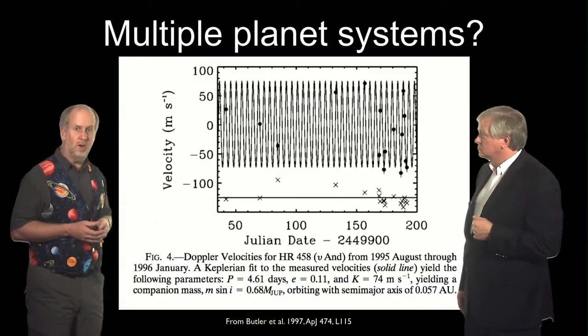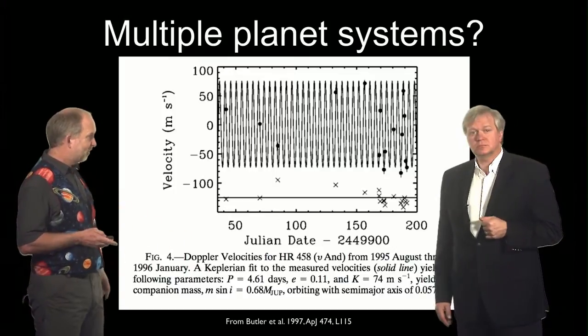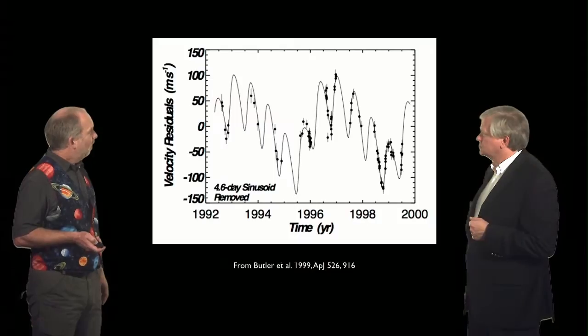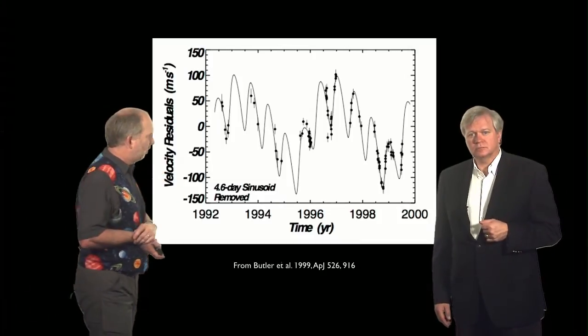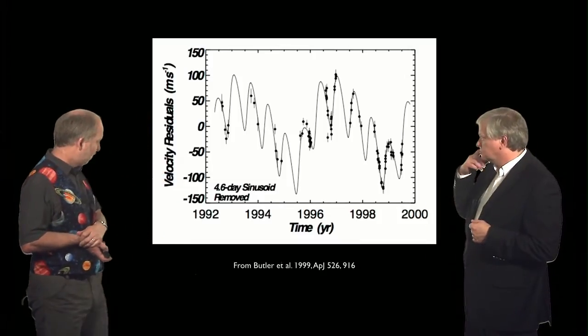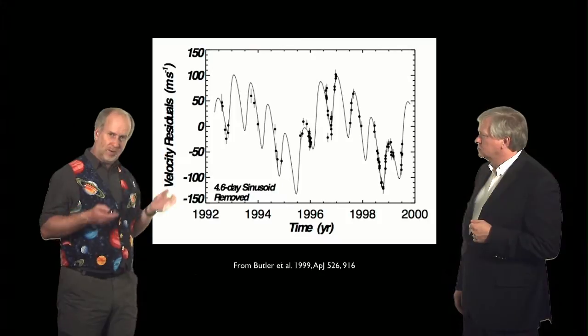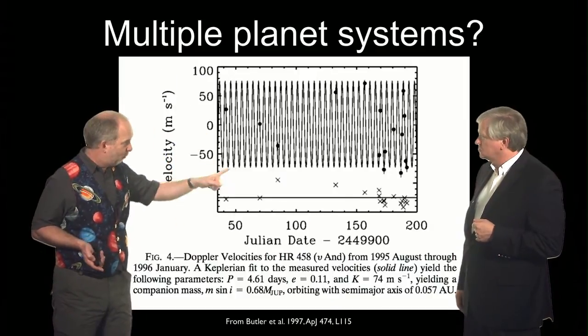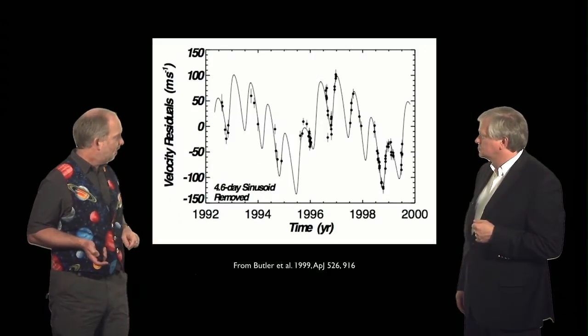That was a classic hot Jupiter in a period of 4.6 days, very close in. But then, as the data got better, they got more data, every bit longer, they started finding there were some residuals. So, if they take that one sine wave you've got here and subtract that off the data and see what's left over, here's what they were getting.